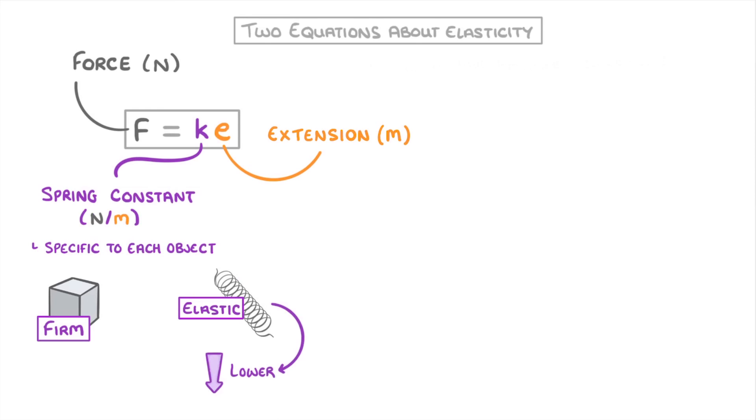A lower spring constant means that the object is more elastic and so easier to stretch, while a higher spring constant means that the object is more stiff and so harder to stretch.